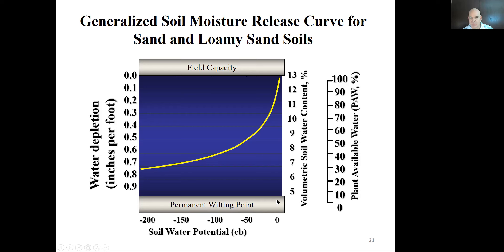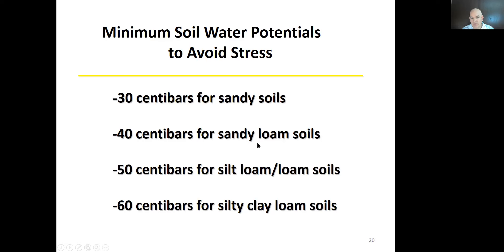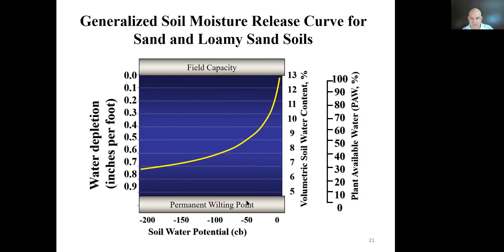If the soil is saturated — zero water depletion — you're at 100% plant available water. As it gets dry, you lose more. For example, a sandy loam soil at minus 40 centibars corresponds to about the 65% plant available water mark — roughly 9.5% volumetric water content — meaning you've lost about 0.35 inches of water per foot. This data must be calibrated per different soil texture, but it's a helpful reference set.